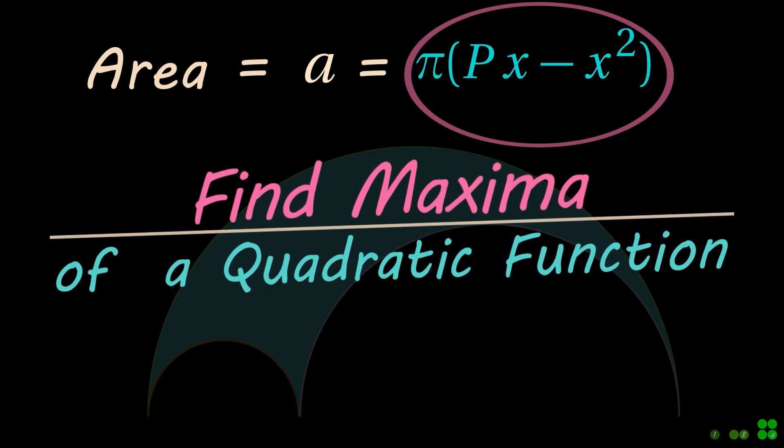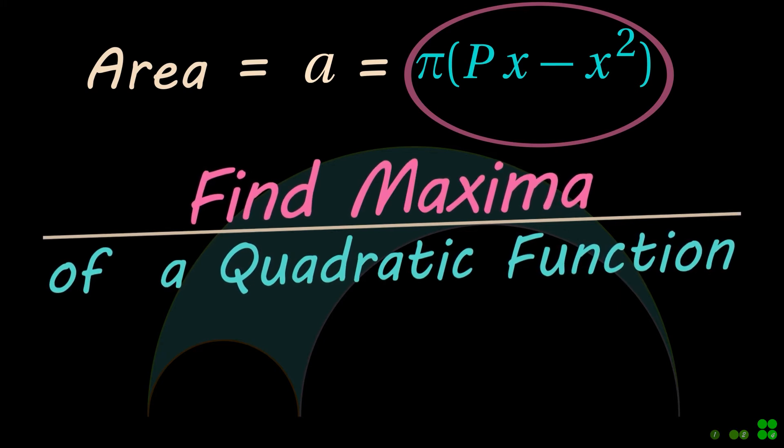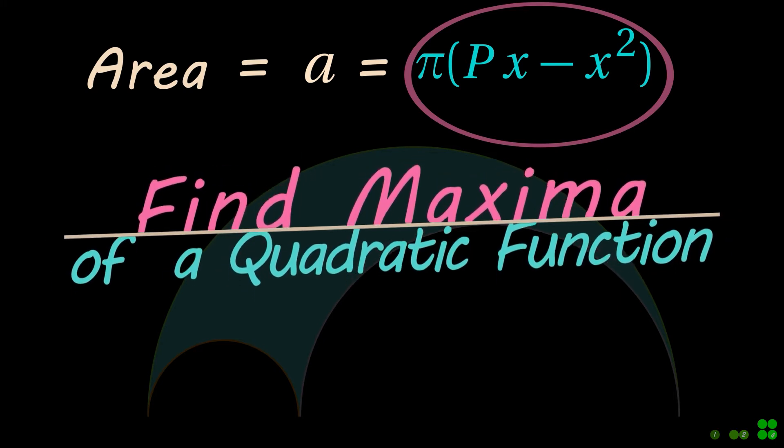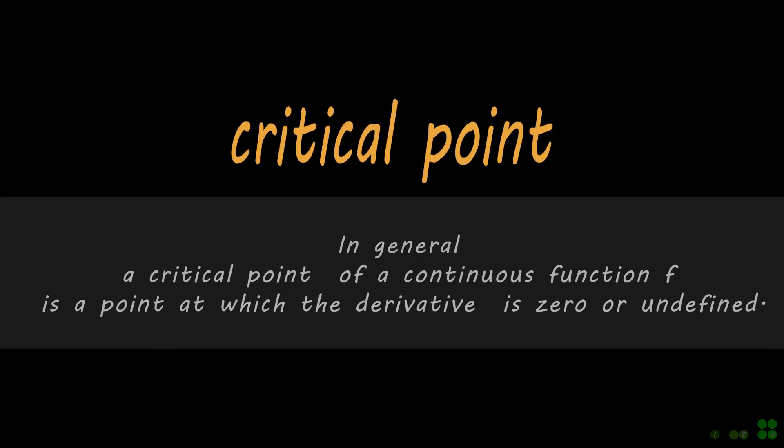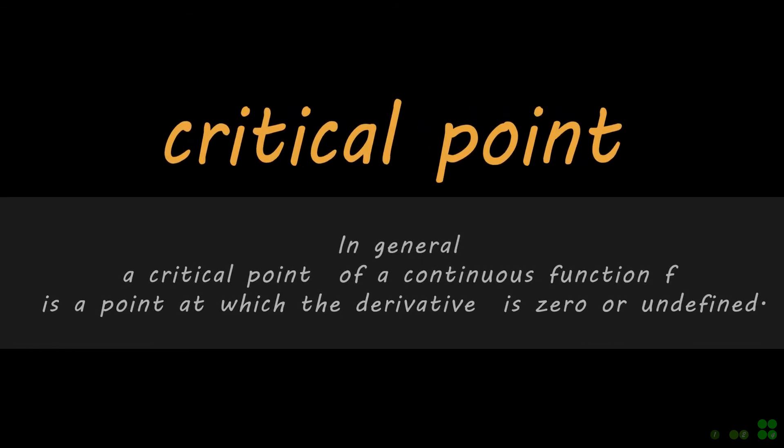One method is to use calculus and find the critical points of the function. In general, a critical point of a continuous function F is a point at which the derivative is zero or undefined.